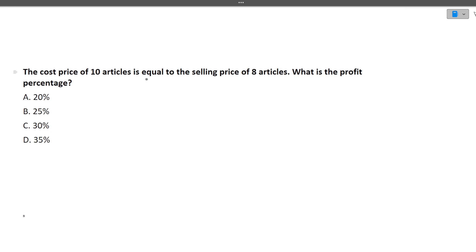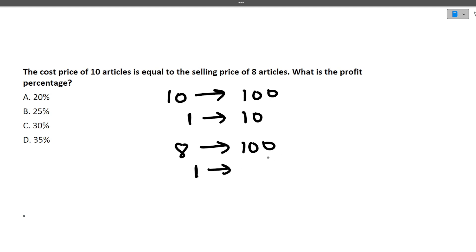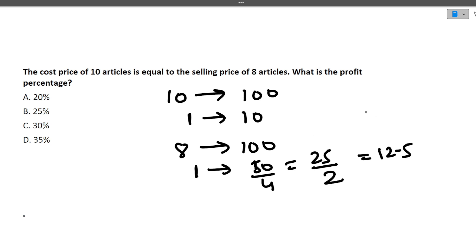Next question: the cost price of 10 articles equals the selling price of 8 articles. What is the profit percentage? Suppose 10 articles cost 100 rupees, so one article costs 10 rupees. The selling price of 8 articles is 100 rupees, so selling price per article is 100/8 = 12.5. We buy at 10 and sell at 12.5, so profit percentage is 25%. I hope this question is clear.